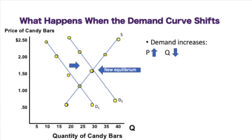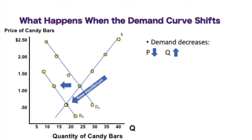Now, what happens if we shift the demand or supply curve? If there's an increase in demand — a shift to the right — we get a new equilibrium. With demand curve D1, equilibrium price is $1 and equilibrium quantity is 25. After the rightward shift, price increases from $1 to $1.50 and quantity increases from 25 to 30. If we decrease demand, the demand curve shifts to the left, price drops, and quantity decreases, giving a new equilibrium point.